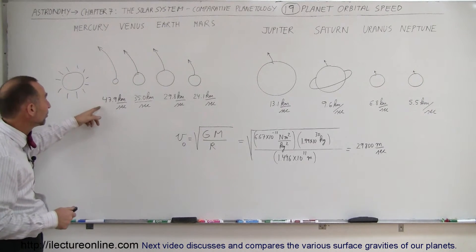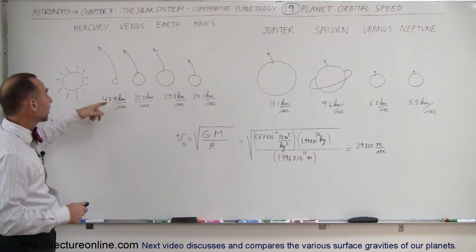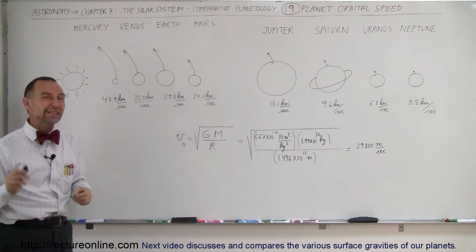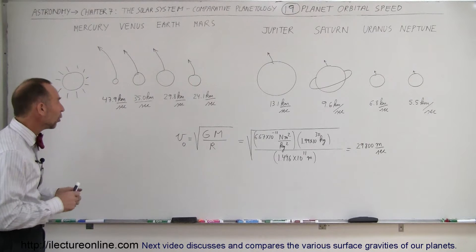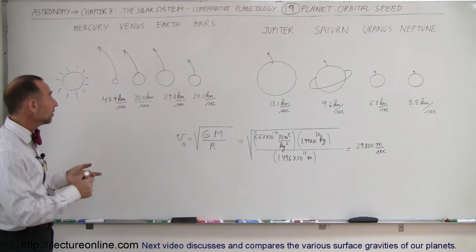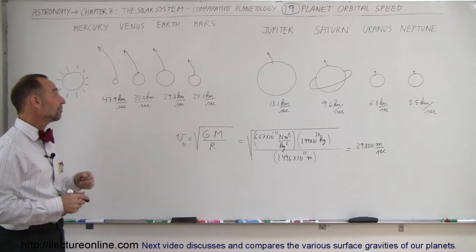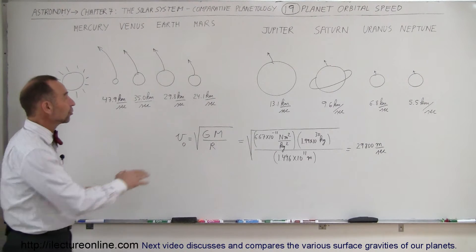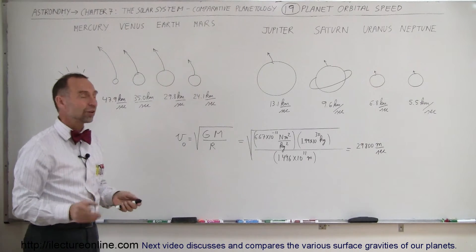For example, Mercury speeds along its path around the sun at 47.9 km per second, that is almost 30 miles per second. Venus, a little slower but still fast at 35 km per second, and the Earth just shy of 30 km per second.